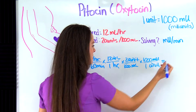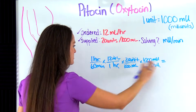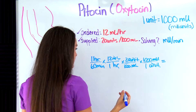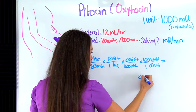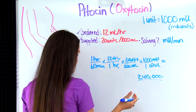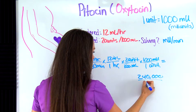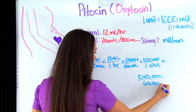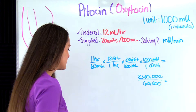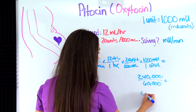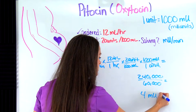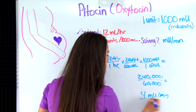Now let's solve: multiply everything at the top, multiply everything at the bottom, then divide. Multiplying everything at the top gives 240,000. Multiplying everything at the bottom gives 60,000. Then 240,000 divided by 60,000 gives four. So four milliunits per minute is what this patient is receiving.